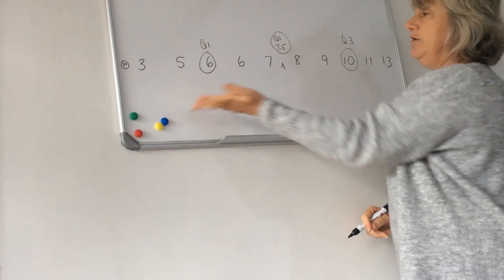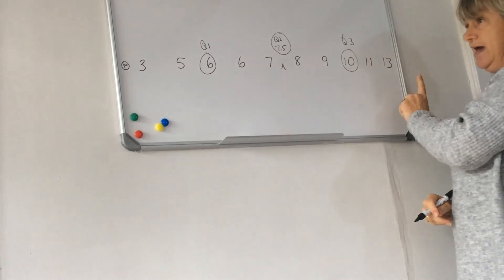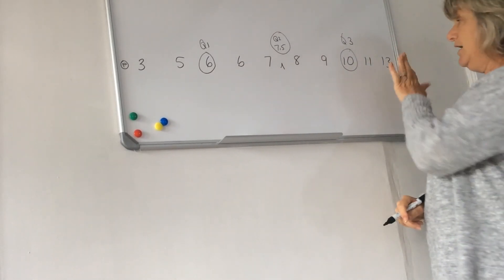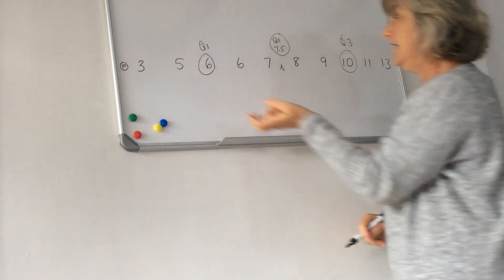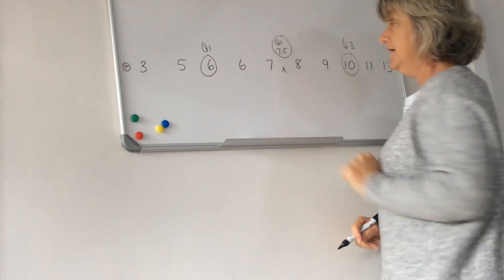And again, minimum three, Q one six, Q two seven and a half, Q three ten, max thirteen. That's your five number summary. And the range of thirteen minus three equals ten. The interquartile range is ten minus six equals four.